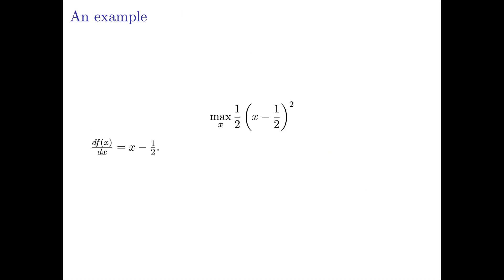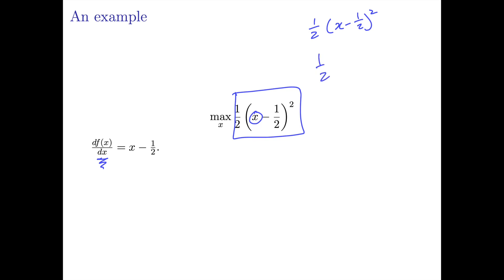Let's do an example. Let's take this function f of x, which is one-half times x minus one-half, squared. The objective is to find the value of x that gives us the highest value for one-half of x minus one-half, squared. We do that by taking the derivative of f with respect to x. The derivative of one-half x minus one-half squared is one-half times 2 times x minus one-half, using the power rule.